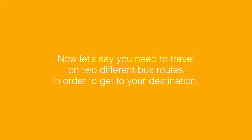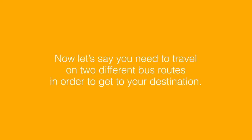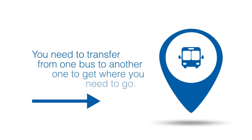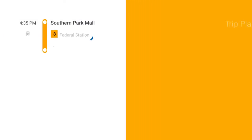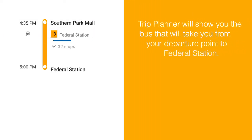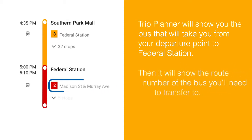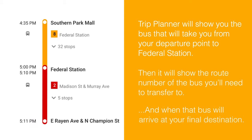Now let's say you need to travel on two different bus routes in order to get to your destination — in other words, you need to transfer from one bus to another. Trip Planner will show you the bus that will take you from your departure point to Federal Station, then it will show you the route number of the bus you'll need to transfer to, and when that bus will arrive at your final destination.